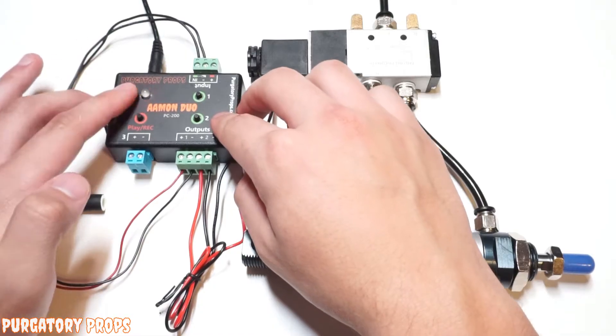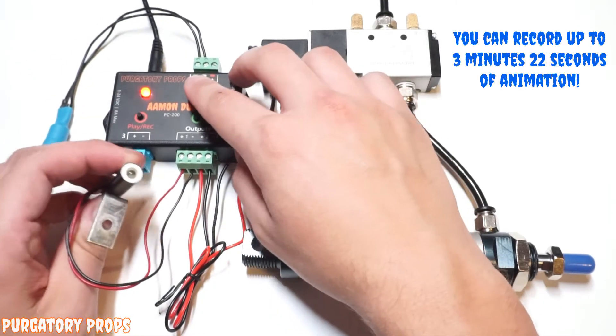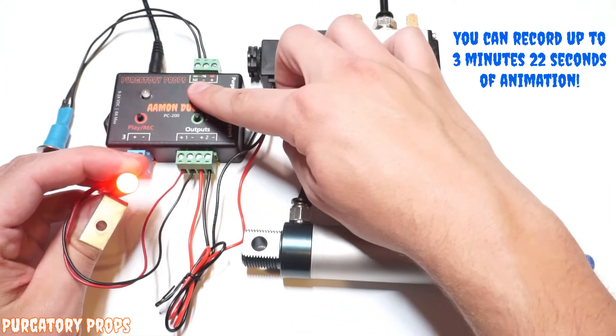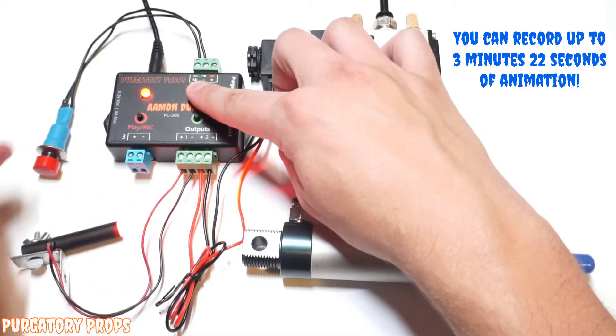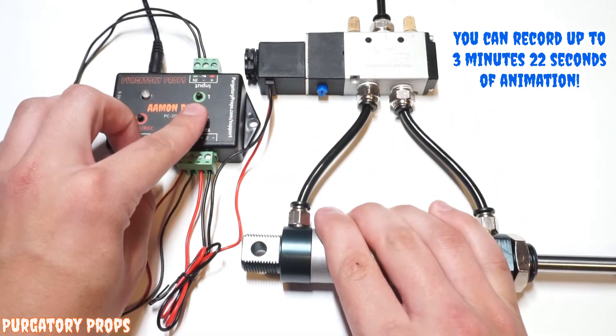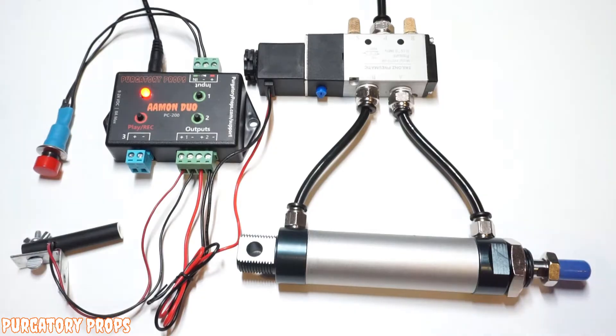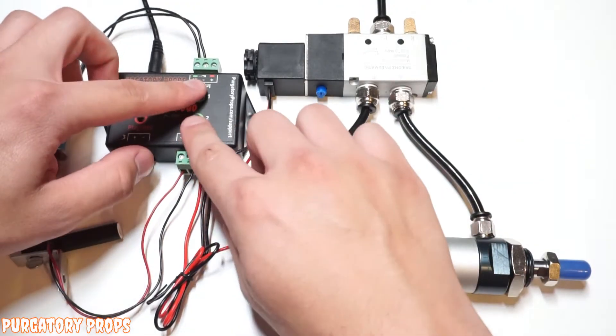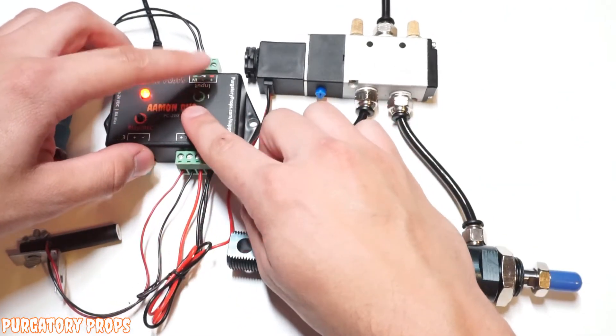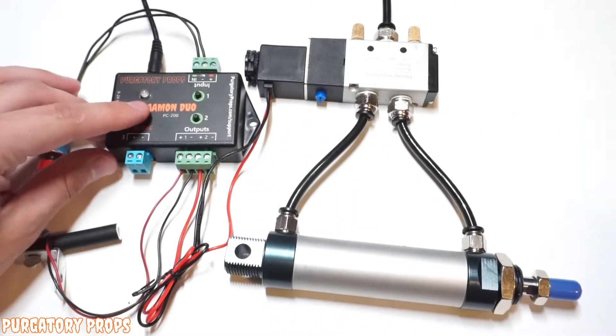So if I release this, the LED will start flashing, which means it's recording. Pressing one turns on that LED, and two extends that air cylinder. So you can do that any combination you want until you're happy with your animation.